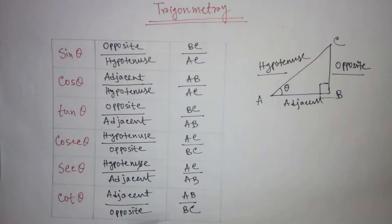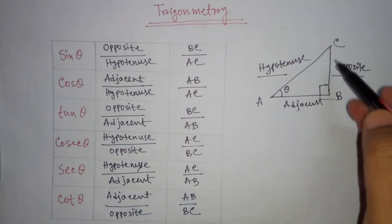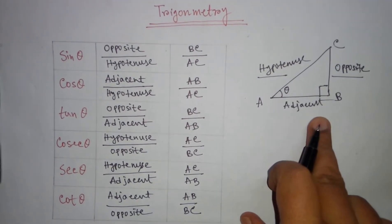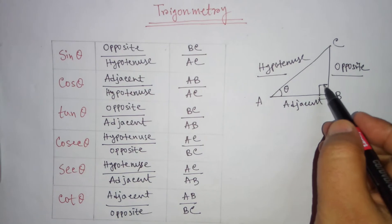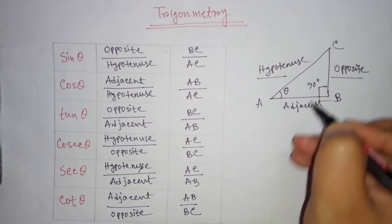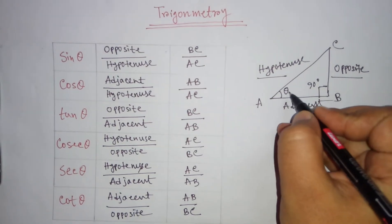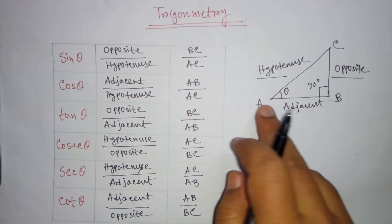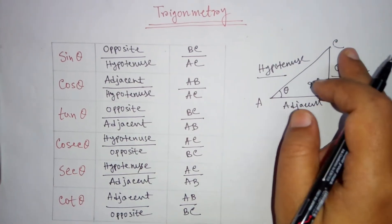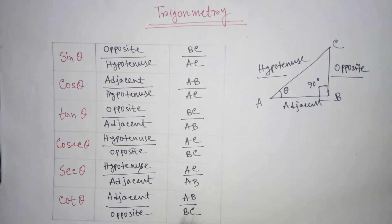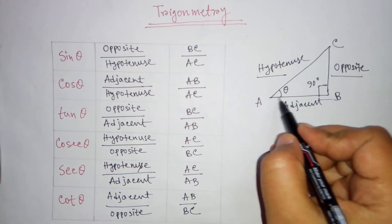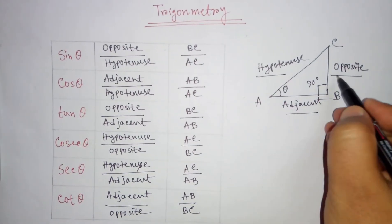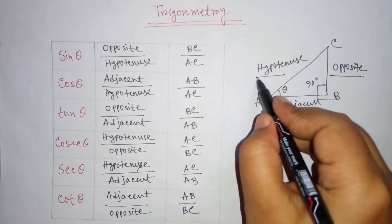For trigonometry, the first important thing is this right angle triangle. This angle is 90 degrees. Now let's assume this angle is theta and the sides are A, B, C. For this triangle, this side is called adjacent, this side is called opposite, and this is the hypotenuse.